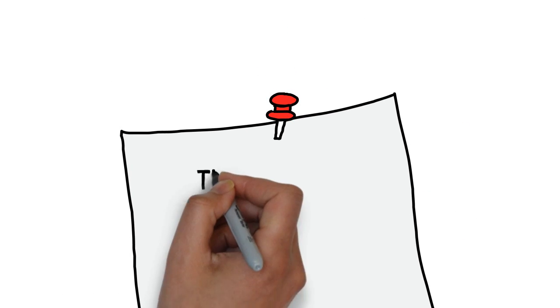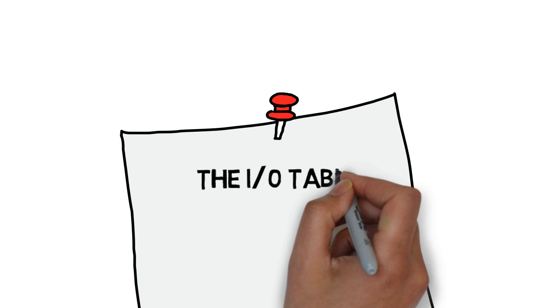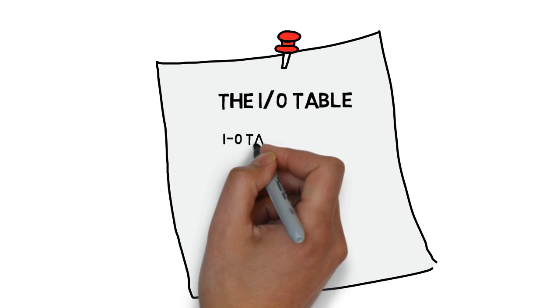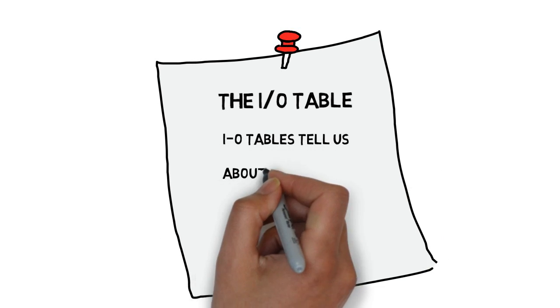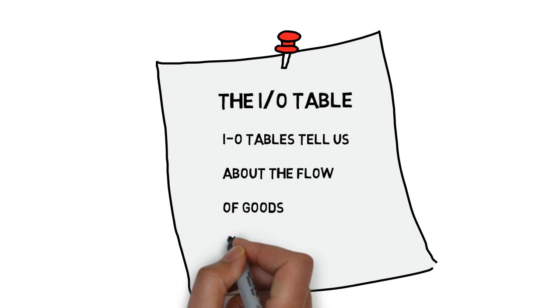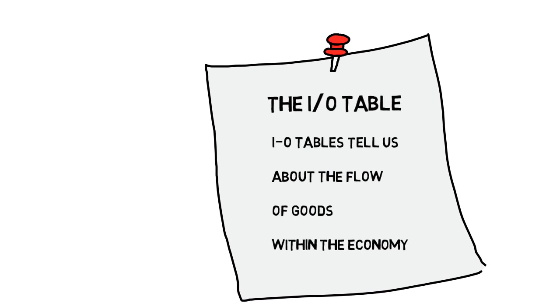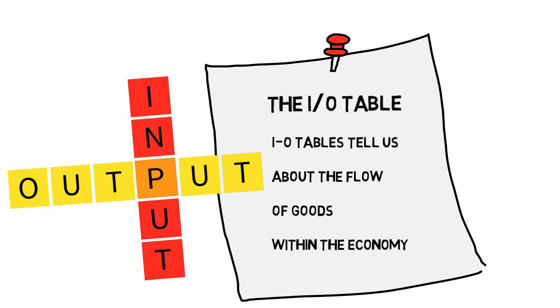Let's talk about input-output tables. What are they and how can we use them? Input-output tables tell us about the flow of goods within the economy. For each industry in the economy, they show which other industries supply its inputs and which other industries use its outputs.